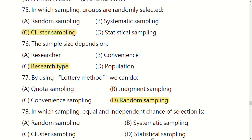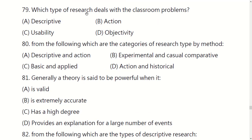In which sampling does every unit have an equal and independent chance of selection? Options are: random sampling, systematic sampling, cluster sampling, or stratified sampling. The right option is A: random sampling.